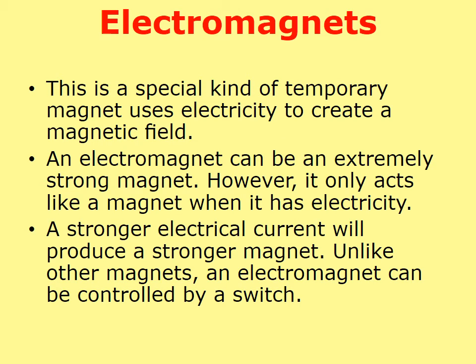Electromagnets are a special kind of temporary magnet which uses electricity to create a magnetic field. An electromagnet can be extremely strong; however, it only acts like a magnet when it has electricity. A stronger electrical current will produce a stronger magnet. Unlike other magnets, an electromagnet can be controlled by a switch.